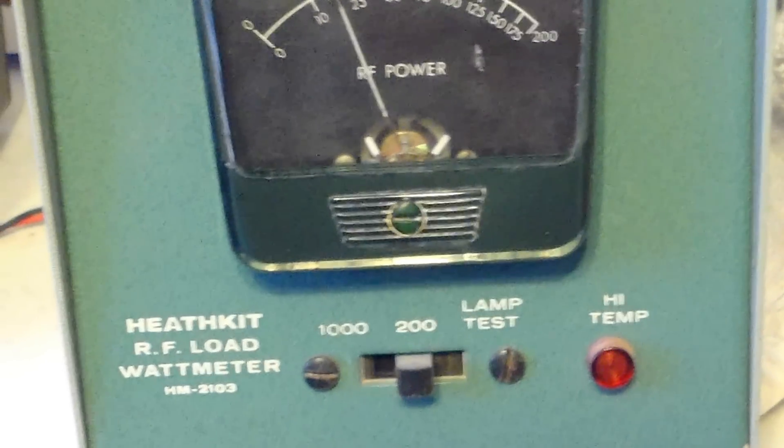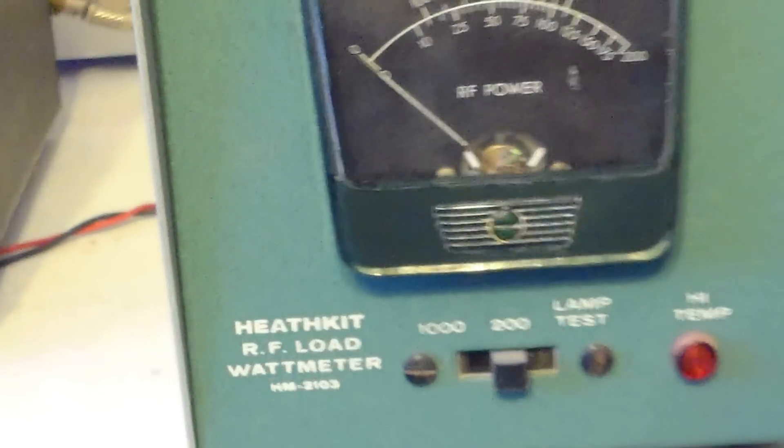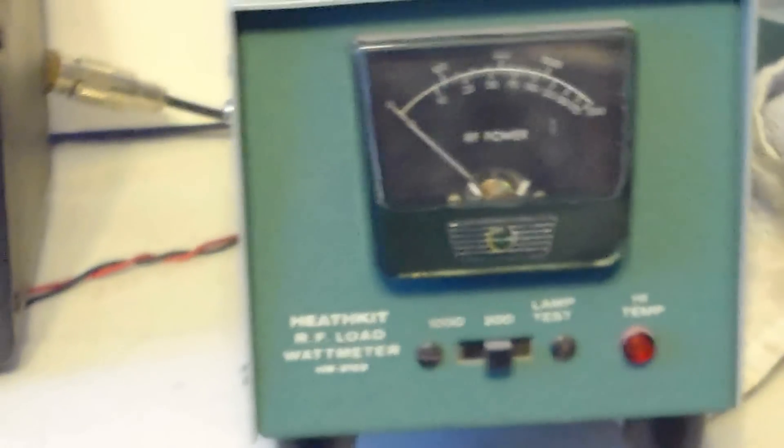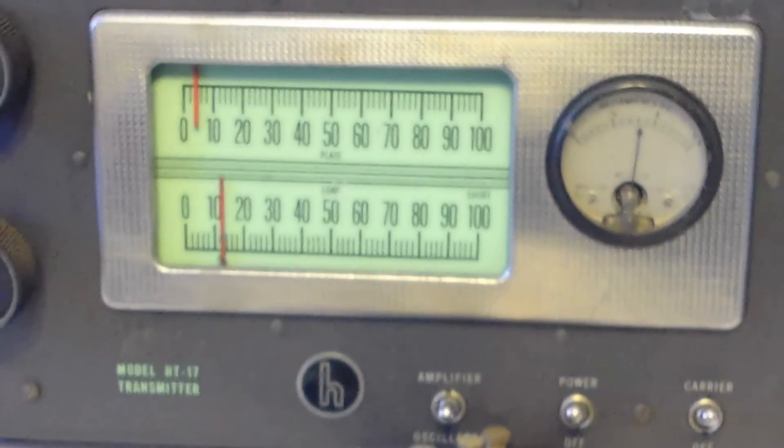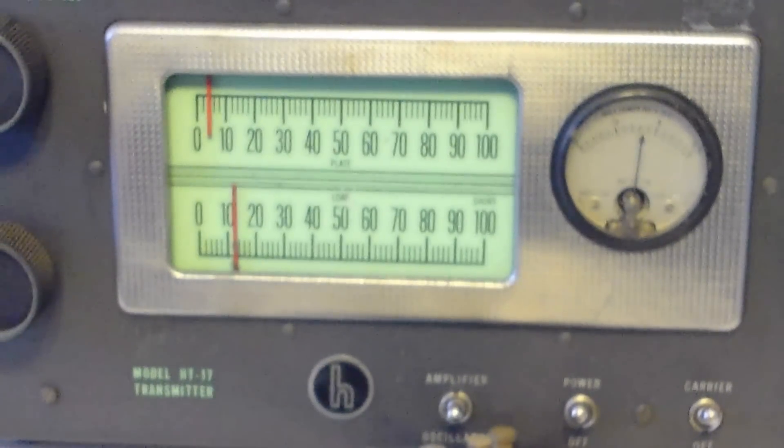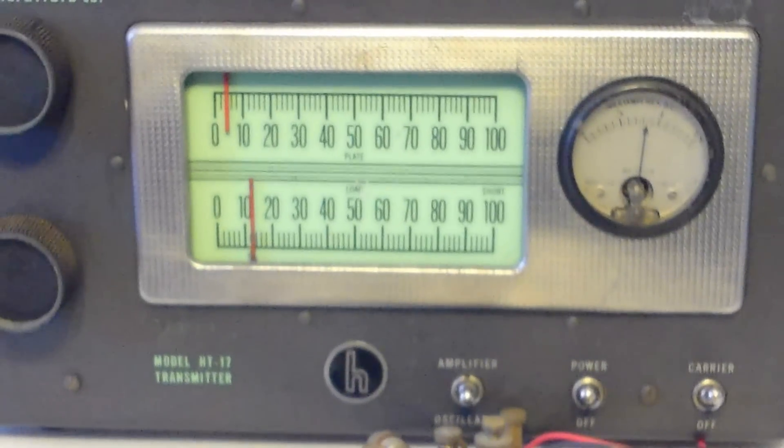And you can see that's putting out about 15 to 17 watts output on the wattmeter on the dummy load. And everything is just hunky-dory on it. I have the 80 and 40 meter coils so you get on 80 and 40.